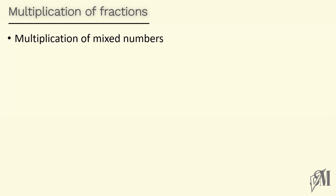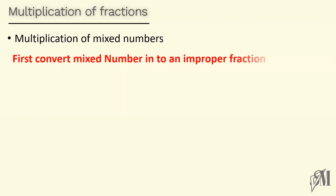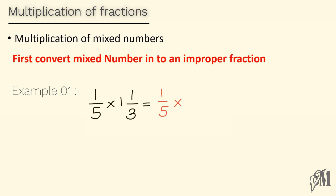The final part of this session is multiplication of mixed numbers. Always remember: when multiplying mixed numbers, the first step must be converting the mixed number into an improper fraction. Look here: 1 over 5 multiplied by 1 and 1 over 3. The first fraction is proper, so we write it as it is. The second part is a mixed number, so we convert it — it becomes 4 over 3. Multiplying: 1 into 4 is 4, and 5 into 3 is 15. Our final answer is 4 over 15.